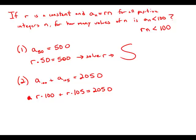We can factor out the r: r times (100 plus 105) equals 2050.